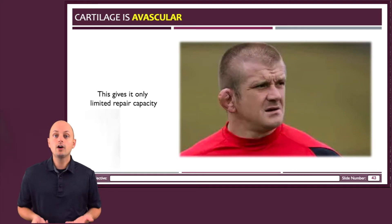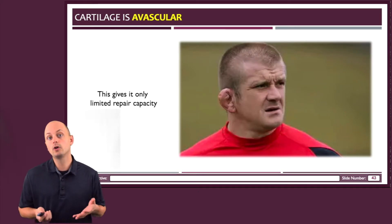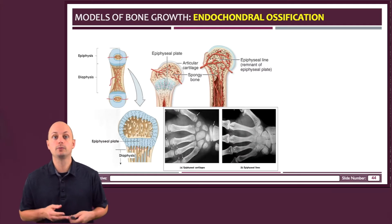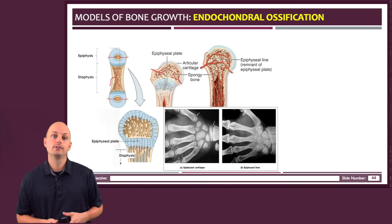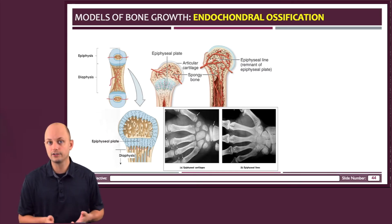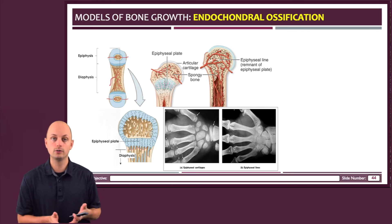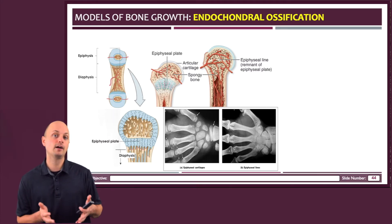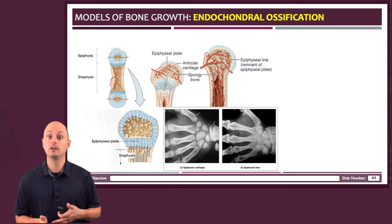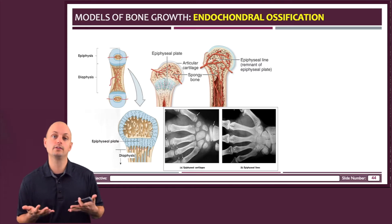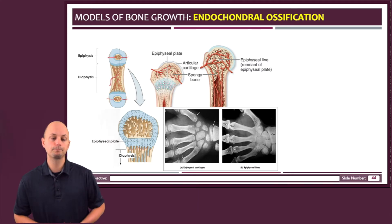Like cartilage, bone also has two primary models for bone growth. The first is known as intramembranous ossification, and it's actually very similar to appositional cartilage growth, except that that process has to also incorporate developing blood vessels as well.